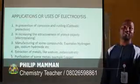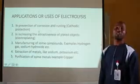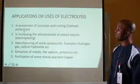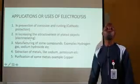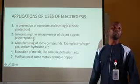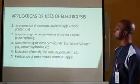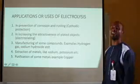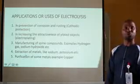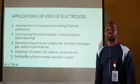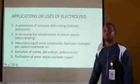The importance of electrolysis cannot be overemphasized. Electrolysis is used in the prevention of corrosion and rusting — generally referred to as cathodic protection. Another use is to increase the attractiveness of plated objects, called electroplating; that's why you can have ornaments that are not gold but can be coated with gold, silver, or copper. Electrolysis is also used for the manufacturing of compounds like hydrogen and sodium hydroxide. Additionally, it is used for the extraction of very electropositive metals such as potassium, sodium, aluminium, and calcium.